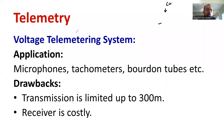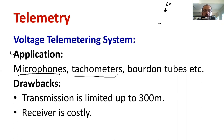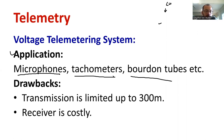Now moving on to applications — what are the major applications of the voltage telemetry system? The voltage telemetry system is employed in microphones, tachometers (which are used to measure speed), and burden tube applications. These are the various applications where the voltage telemetry system can be used.